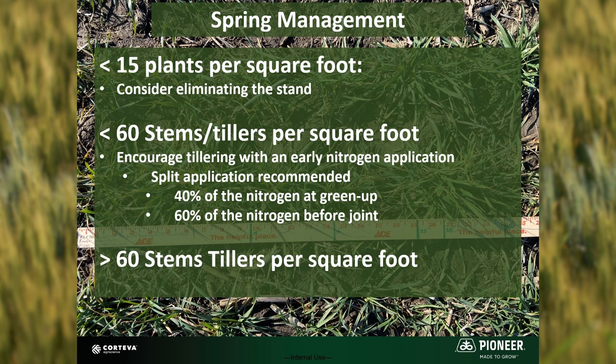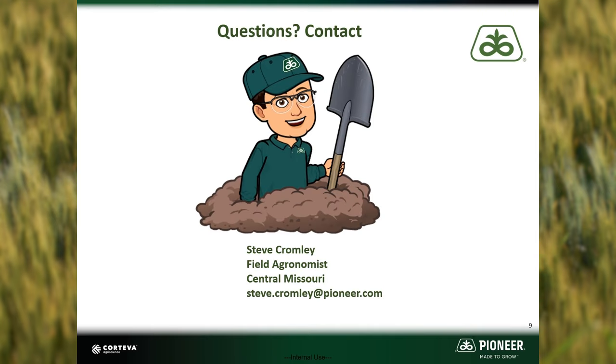If there are greater than 60 stems per square foot present, apply nitrogen before joint.